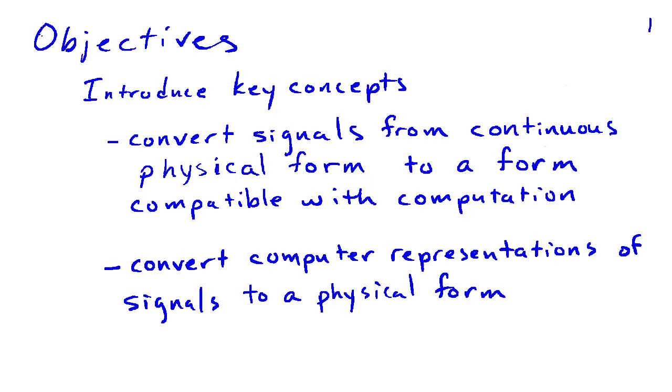The operations of sampling and reconstruction are essential for using a computer to manipulate or store the kinds of signals we encounter in the physical world. The objectives of this video are to introduce some of the key concepts involved in converting signals from the continuous types of forms that we find when we measure them in the physical world to forms that are compatible with computing. We're also going to look at converting those computer representations of signals back to a physical form, such as a voltage.